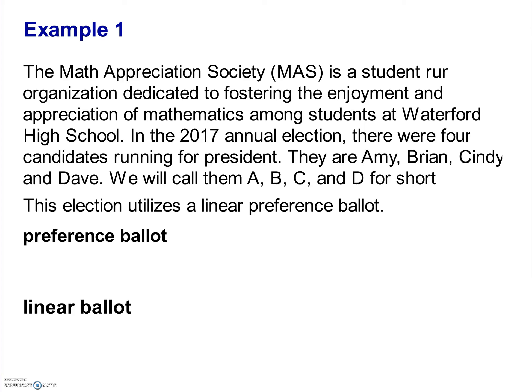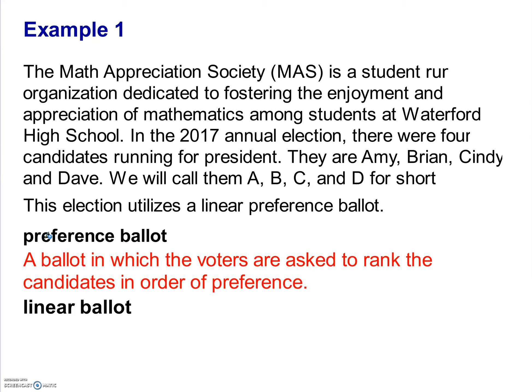The first thing to recognize is that this election uses a preference ballot. A preference ballot is a ballot in which voters are asked to rank the candidates in order of preference. In this example, there are four slots — one for each candidate. You choose who is first, second, third, and fourth: A meaning you like that candidate the most.